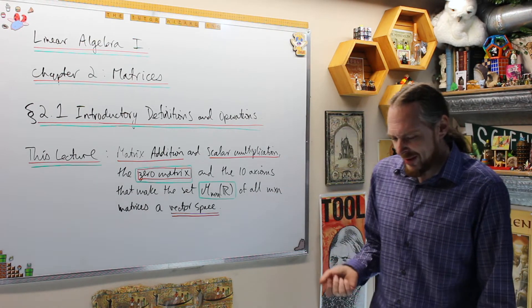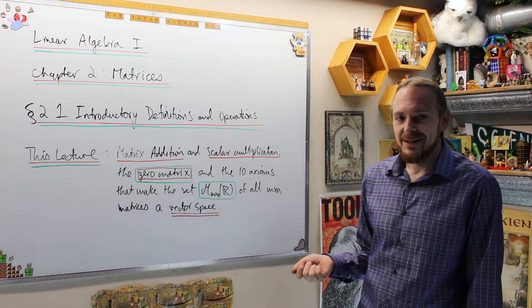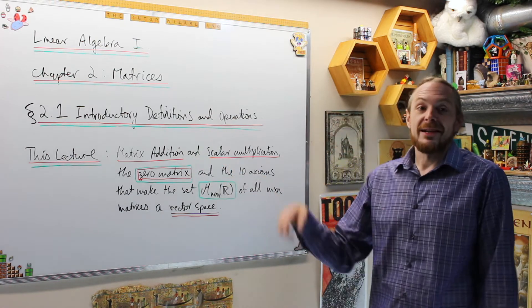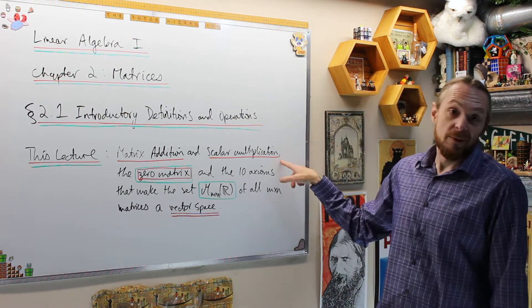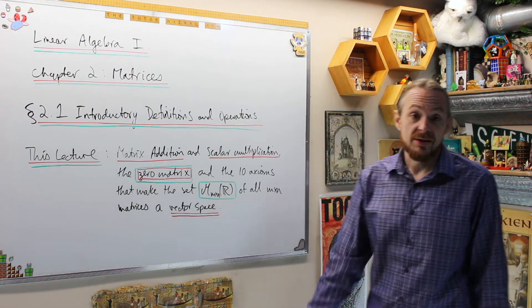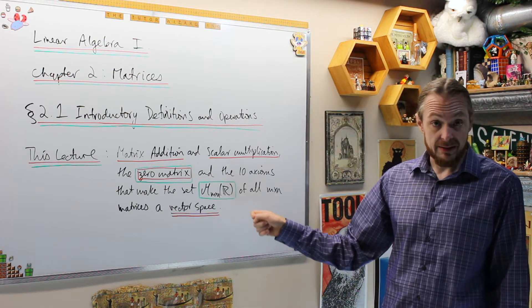If you know where we're going, we're trying to make a vector space out of the set of all matrices and these two operations. We need a zero and we need the guy one from scalar multiplication, and we're trying to create a vector space structure for the set of all m by n matrices over the real numbers.